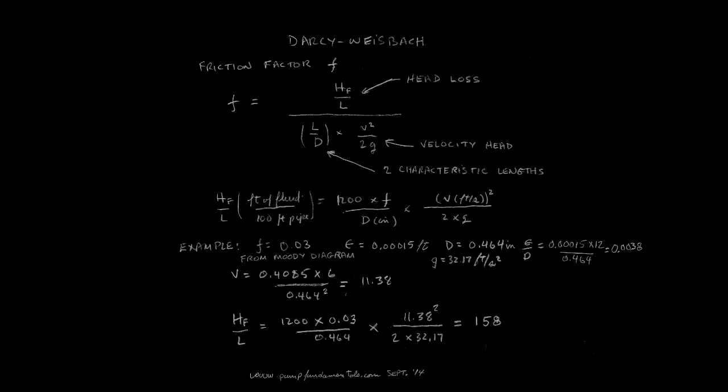The term v squared over 2g is the velocity head, which is the amount of energy that corresponds to the movement of the liquid. L is the pipe length, and d the pipe diameter.